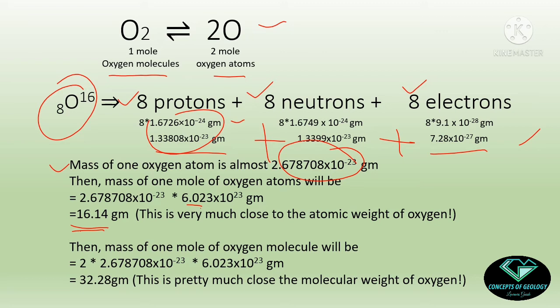There will always be some error because an atom contains not only protons, neutrons, and electrons but also energies and subatomic particles. So roughly this is almost 16 grams. For the oxygen molecule, within one molecule we have two oxygen atoms, so the weight of one mole of oxygen molecules is approximately 32.28 grams — very close to the molecular weight of oxygen. This proves that 32 grams of oxygen contains one mole of oxygen molecules, and 16 grams contains one mole of oxygen atoms — not a single atom or molecule.